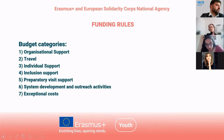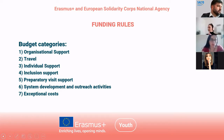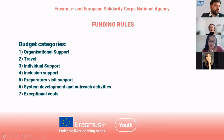We have some new things here — funding rules. As you can see, we have seven budget categories: organizational support; travel, based on distance calculator; and we have some new things — standard travel and green travel. We have something new: individual support is a new category, inclusion support is also something new, we have preparatory visit support, system development and outreach activities — which is for organizations with higher experience — and we have exceptional costs.